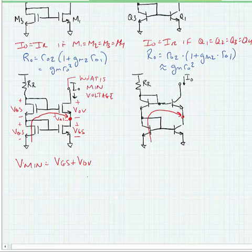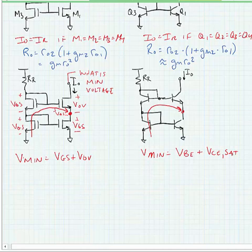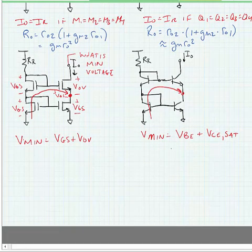Now looking at the bipolar case, what is the minimum voltage? It is by the same logic one VBE plus one VCE sat. Okay, well how bad is this? Well we know for instance that this is about 0.9 volts in the bipolar transistor case.